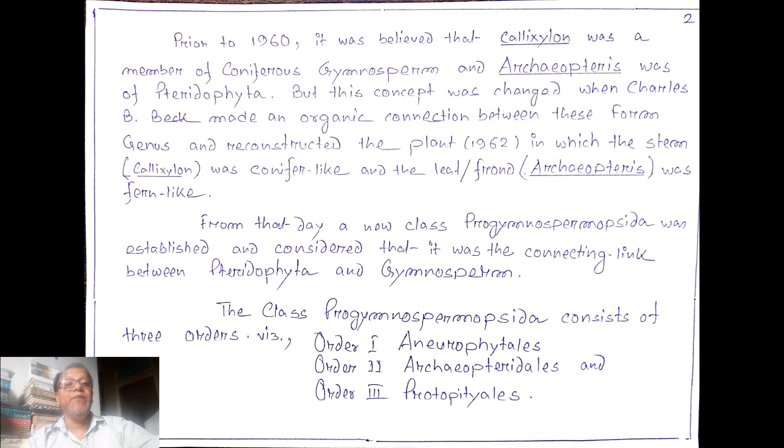Interestingly, a plant having two different characters - its stem is like a conifer whereas the leaf characterizes the properties of pteridophyta. From that day a new class Progymnospermopsida was established in the plant kingdom and considered as the connecting link between class Pteridophyta and class Gymnosperm. The class Progymnospermopsida consists of three orders: Aneurophytales, Archaeopteridales, and Protopitales.